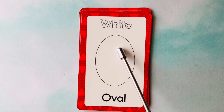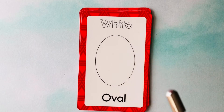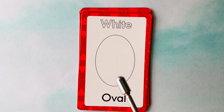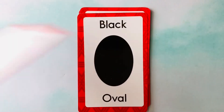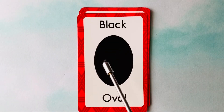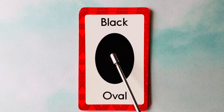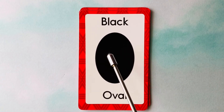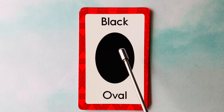This is an oval. What color is this oval? It's a white oval. This is also an oval. What color is this oval? It's a black oval. This is a black oval.